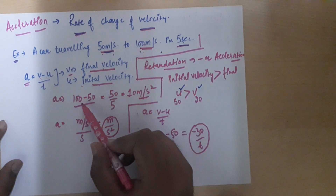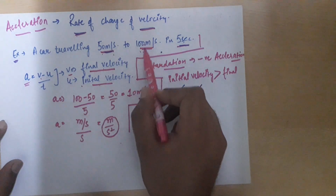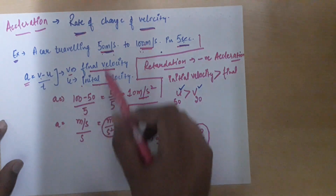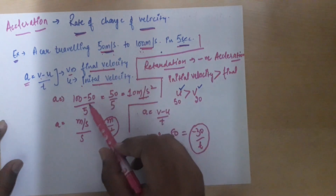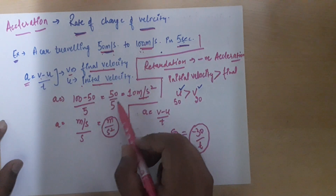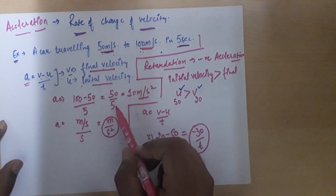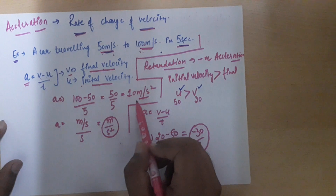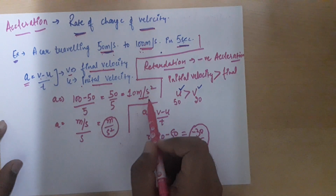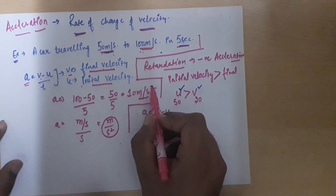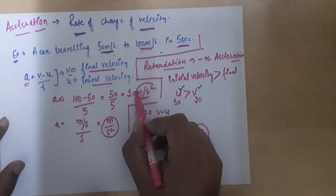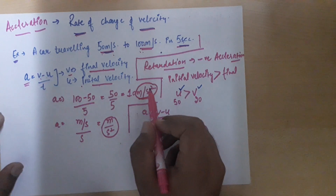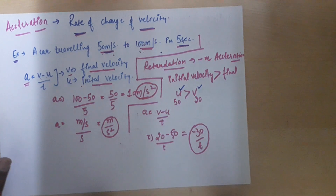Applying the formula: final velocity is 100 and initial is 50, so 100 minus 50 upon 5 — that is 50 by 5, which equals 10 meters per second squared. The unit here is meters per second squared.